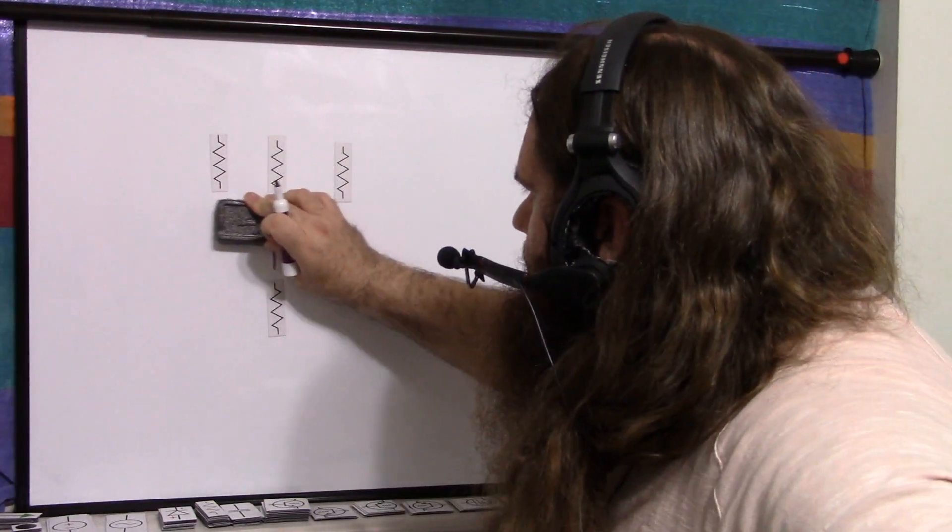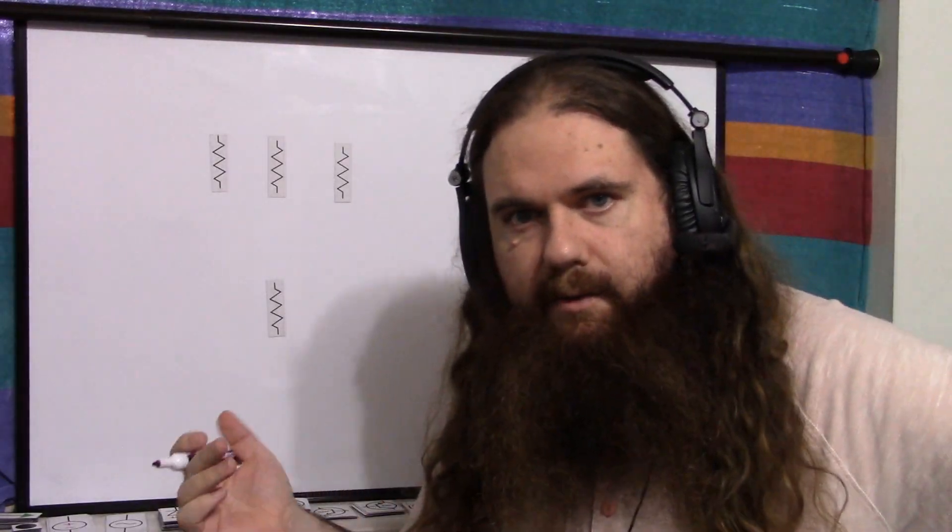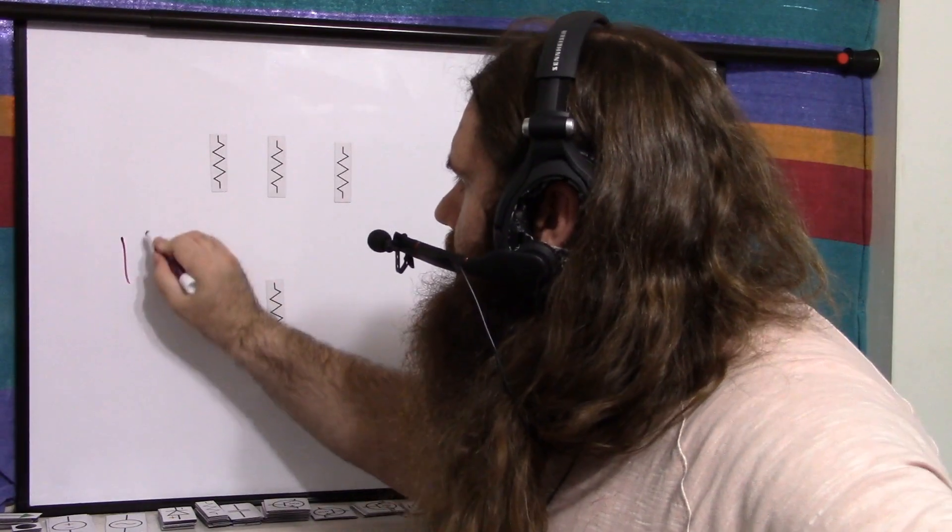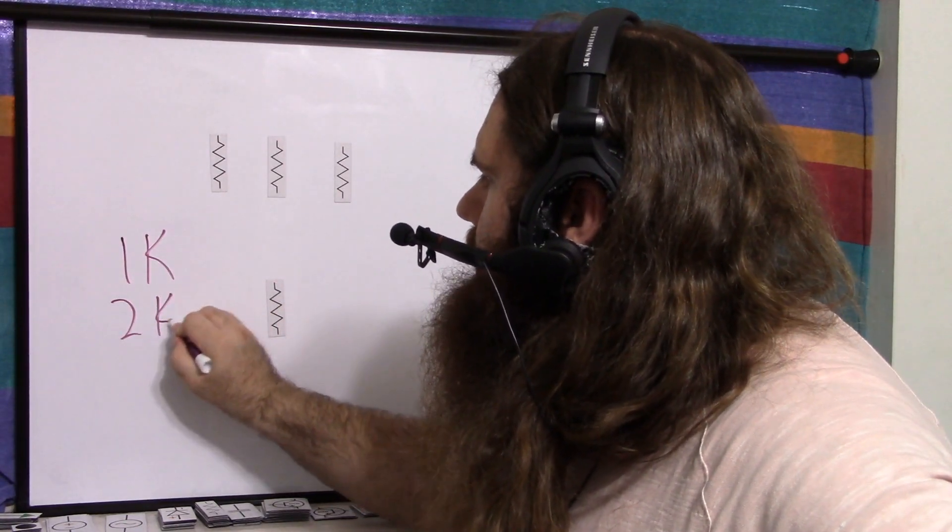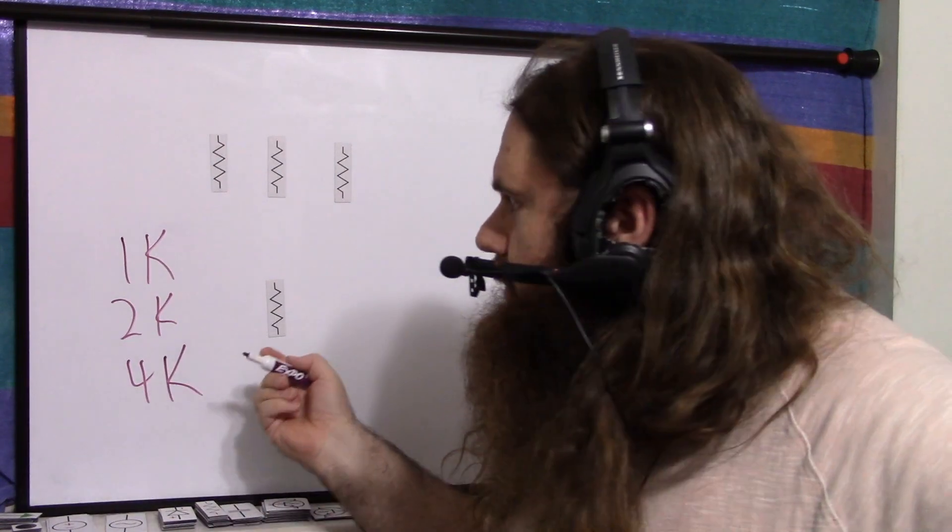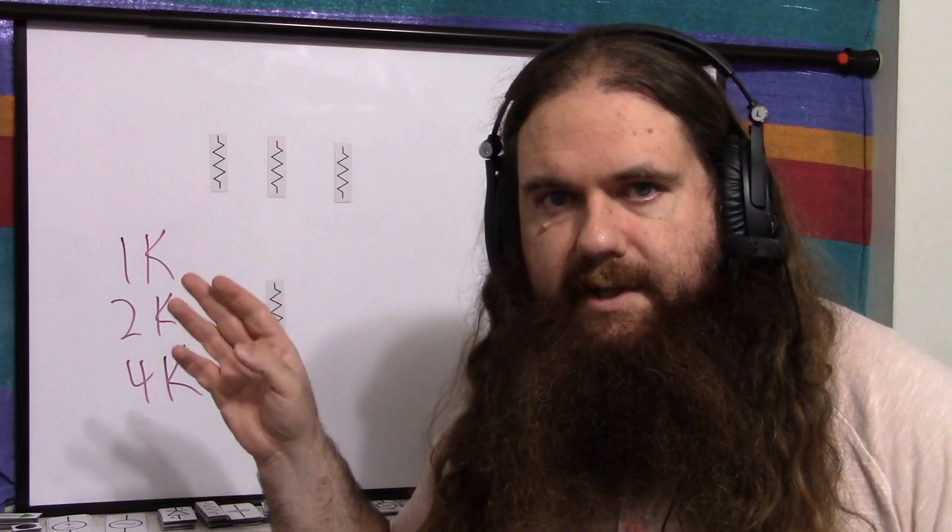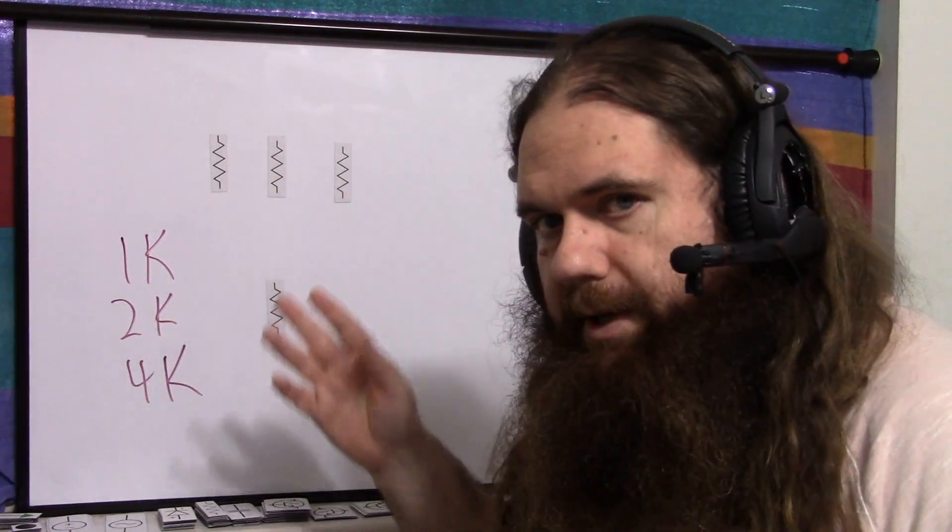And most commonly, when you hear the term resistor ladder, they're going to be powers of two values, like 1K, 2K, 4K, and so forth, because a binary number is powers of two, so you could think of each resistor working with one digit. And there's different ways to build them and incorporate them into circuits.